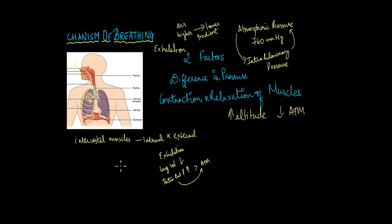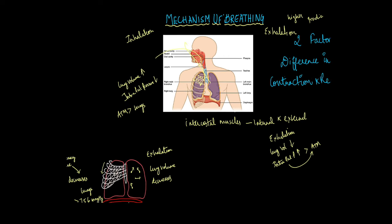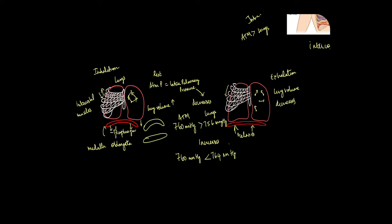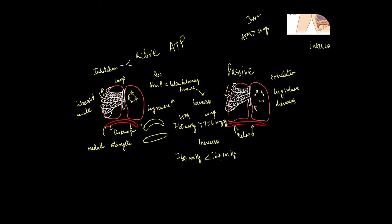One more thing to remember: inhalation is an active process. Because it involves the contraction of the diaphragm and the intercostal muscles, and for muscles to contract they need ATP, inhalation is an active process. Exhalation is mainly governed by the recoil of the muscles as they relax and return to their original shape. This recoil is what makes the lung volume decrease, which is why exhalation is a passive process. We utilize energy to inhale, but we don't utilize energy when we exhale.